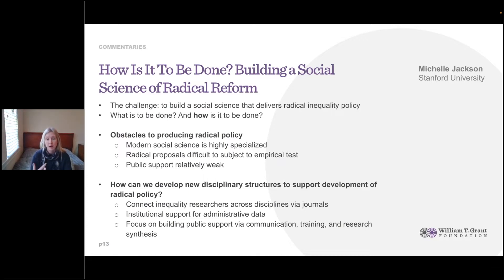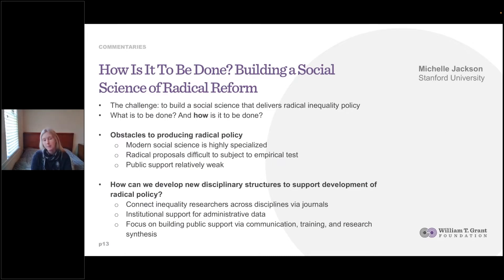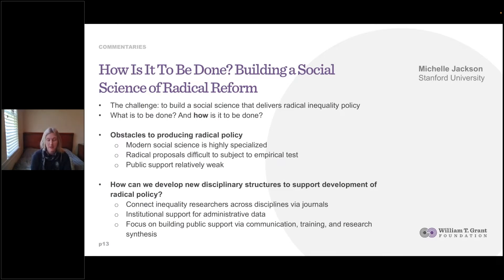The final obstacle is public support. It's undeniable that some of the policies we might talk about could be pretty difficult to promote to the public. We need to think carefully about how we build that support. In the paper, I include some practical proposals for how we might overcome these problems. Practically, what can we do to build a social science that makes it possible for radical policies to gain scientific and public credibility?